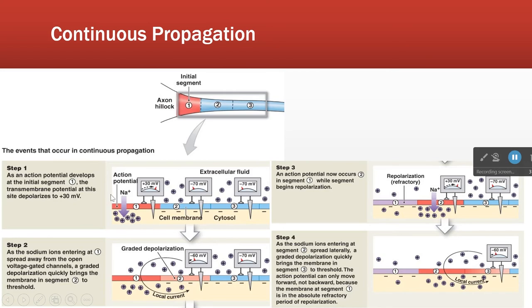Sodium comes rushing in. The sodium does not stay put — it's all open on the inside, so the sodium that came in here ends up drifting forward. As the sodium moves, it changes the membrane potential in segment number two, causing a depolarization of the second segment. So depolarizing the first segment causes sodium to enter, which depolarizes the second segment.